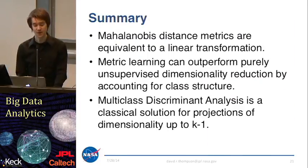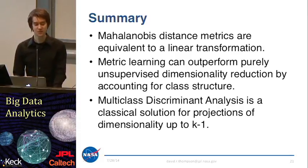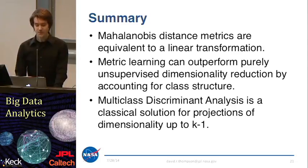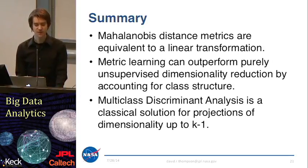To summarize what we've covered in this lecture: we talked about Mahalanobis distance metrics, which are an ellipsoidal generalization of the Euclidean distance. Measuring Mahalanobis distance is equivalent to applying a linear transformation on the original dataset. Metric learning can outperform purely unsupervised dimensionality reduction by accounting for the structure of classes. And we've additionally shown how multiclass discriminant analysis is a particularly useful form of metric learning that can provide projections of dimensionality up to k minus 1, where k is the number of classes in your dataset.